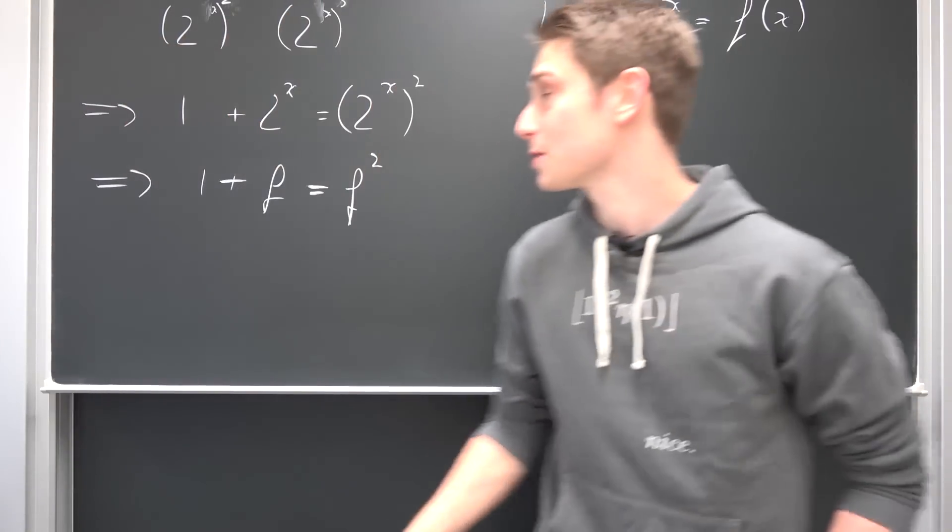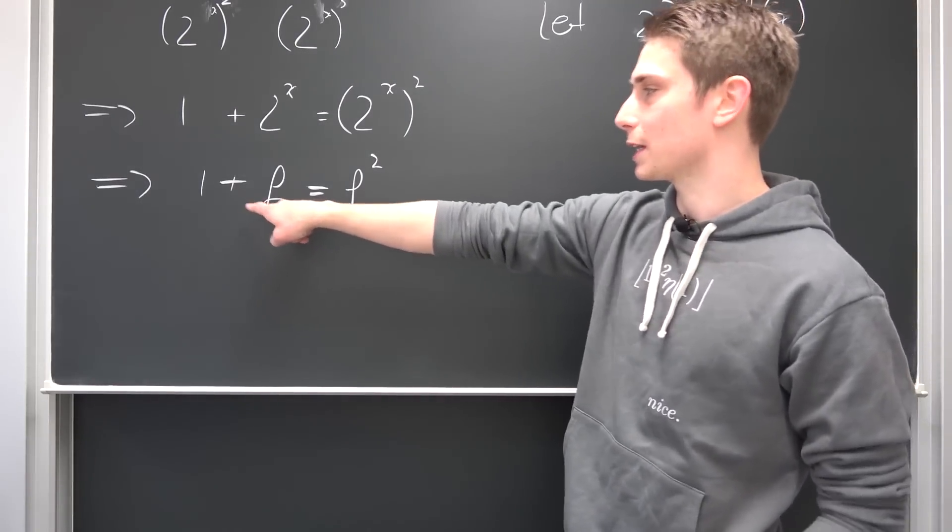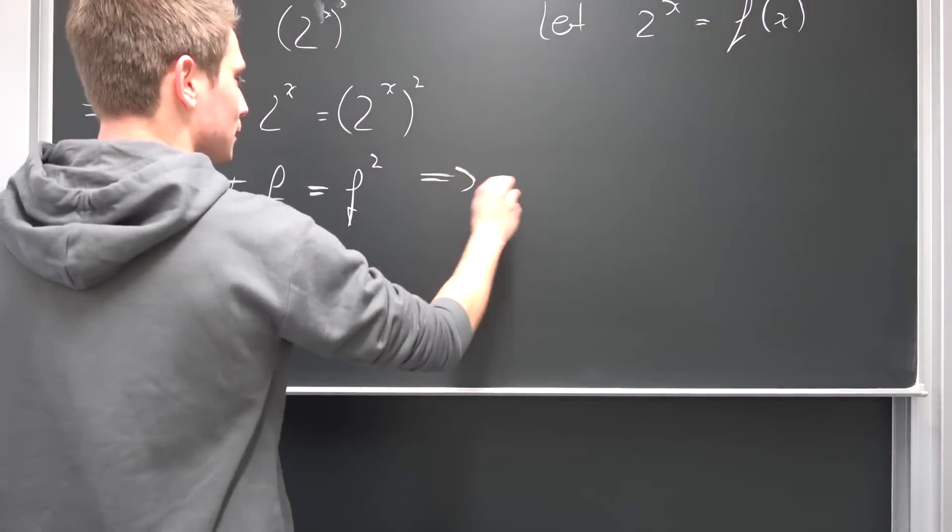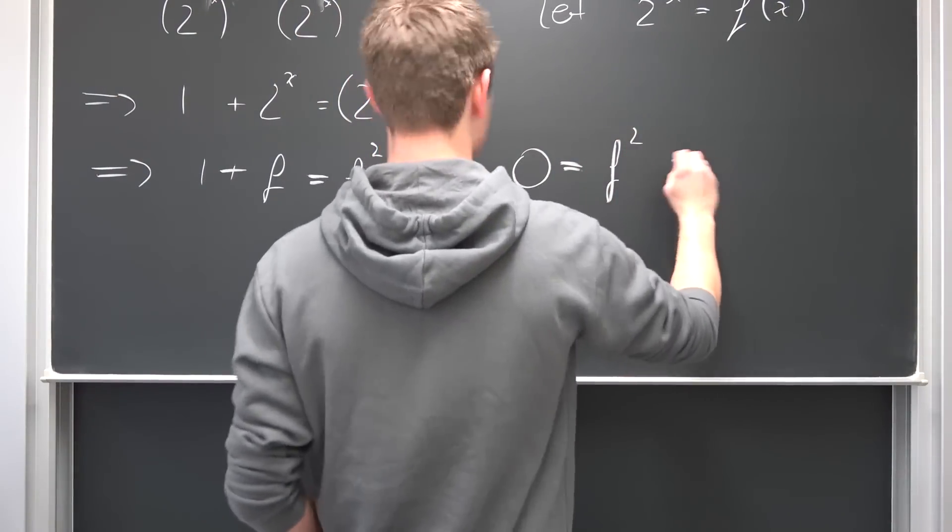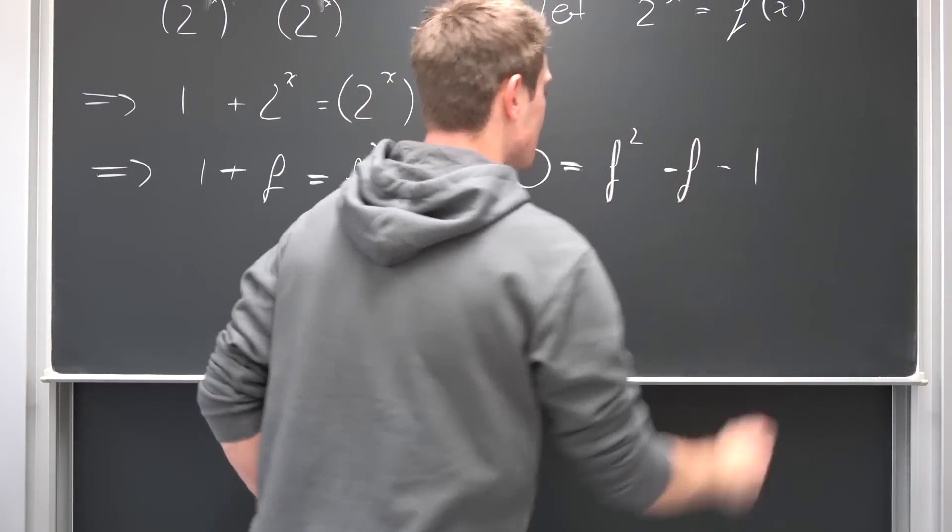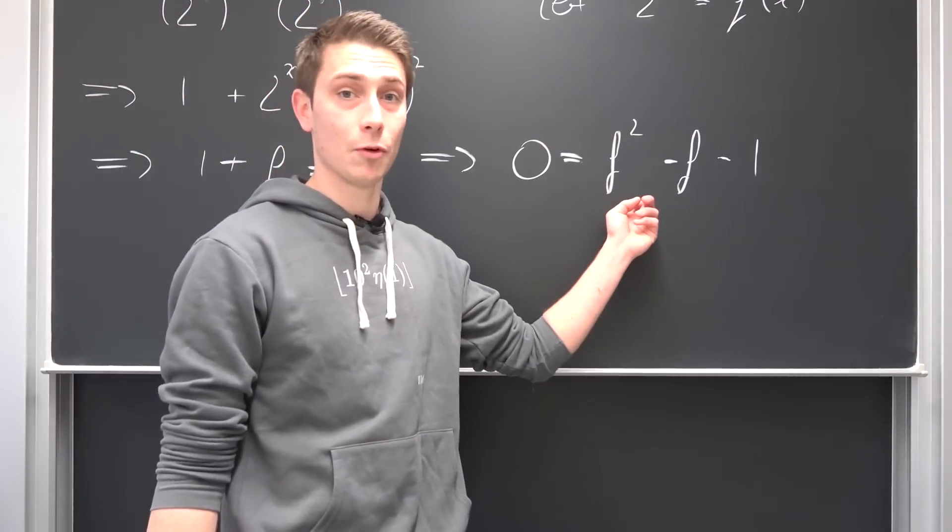And now we have a pretty famous polynomial on our hands. So now we can just subtract f and 1 on both sides, resulting in 0 being equal to f squared minus f minus 1.